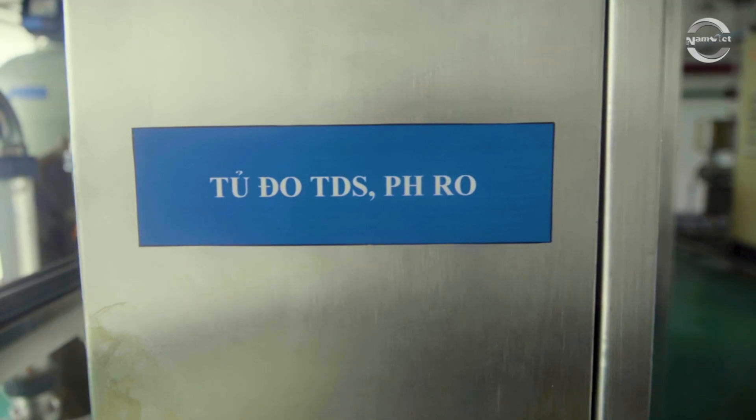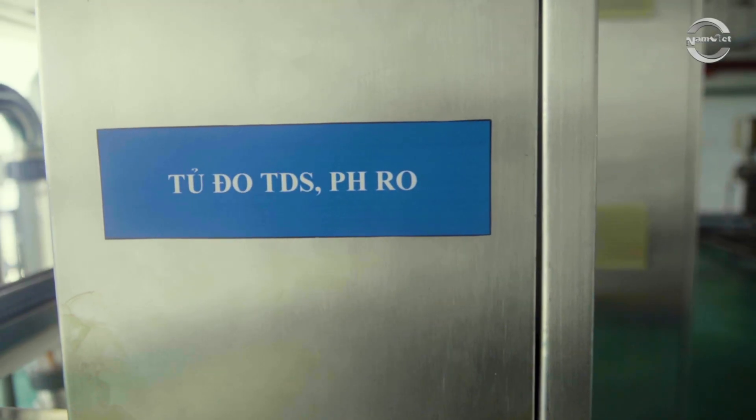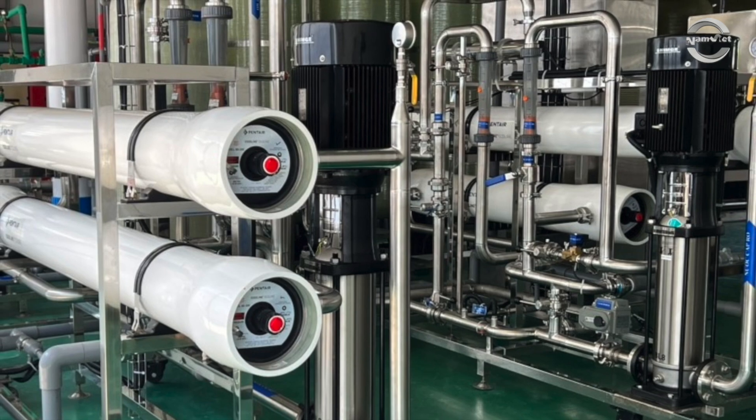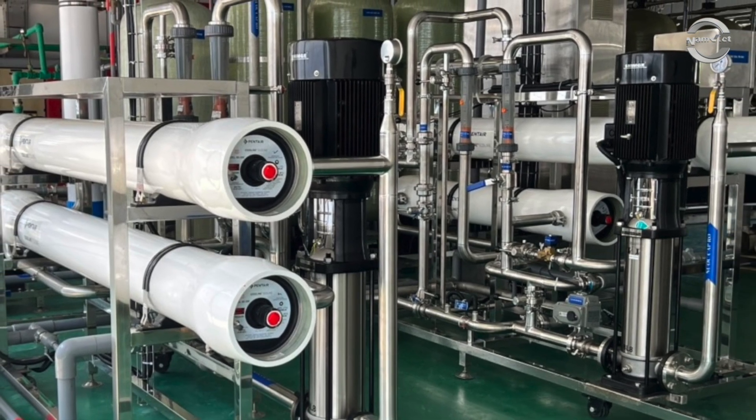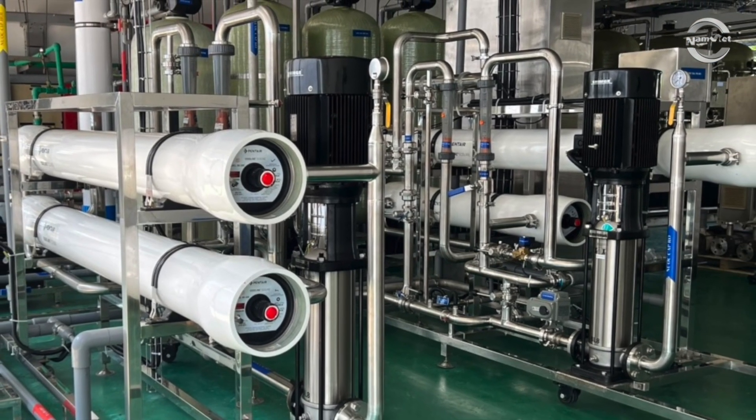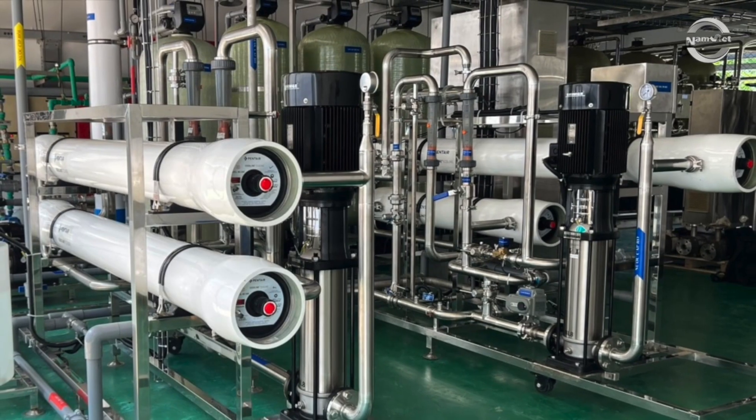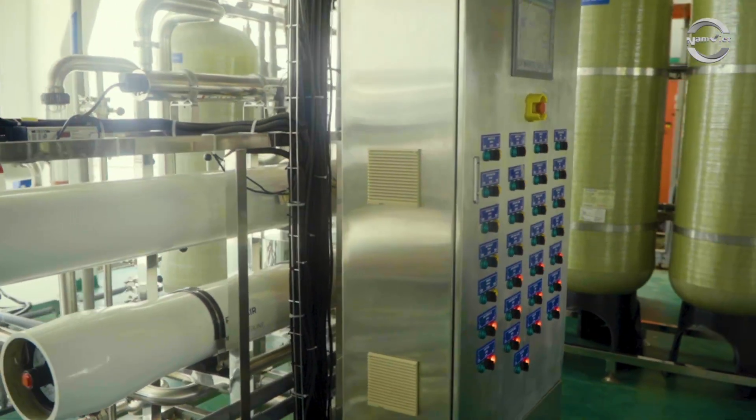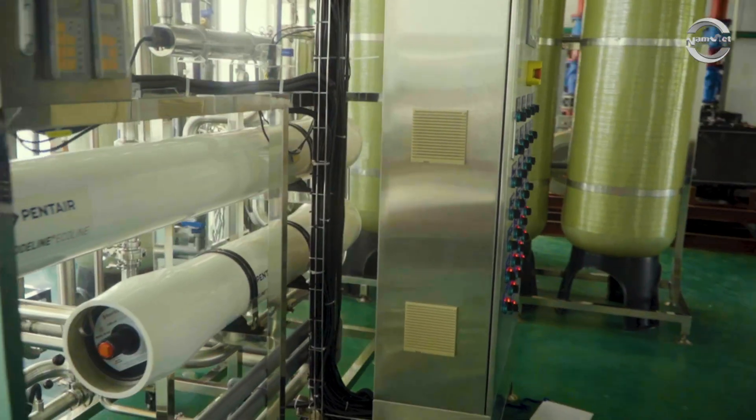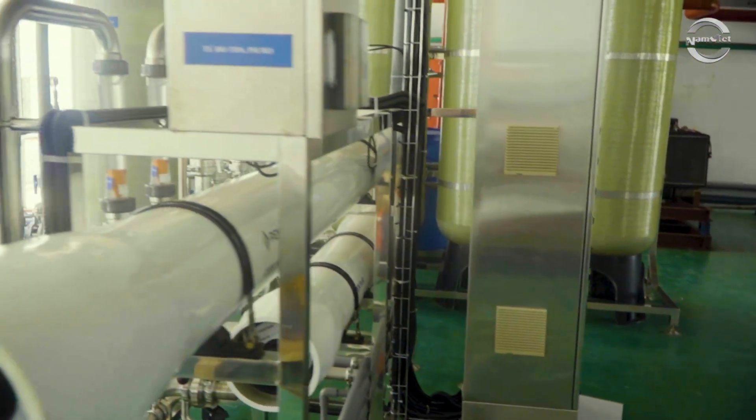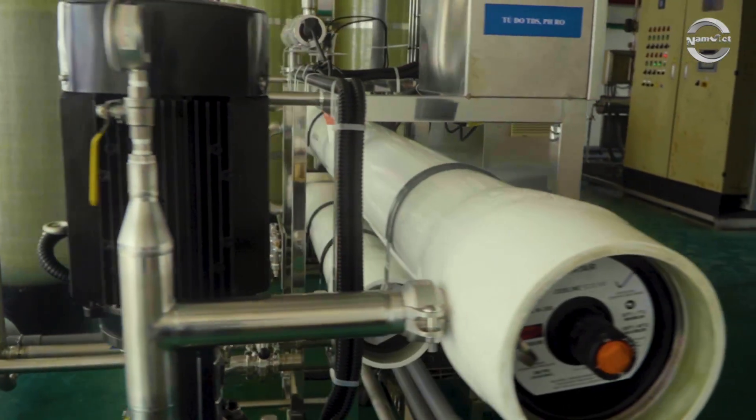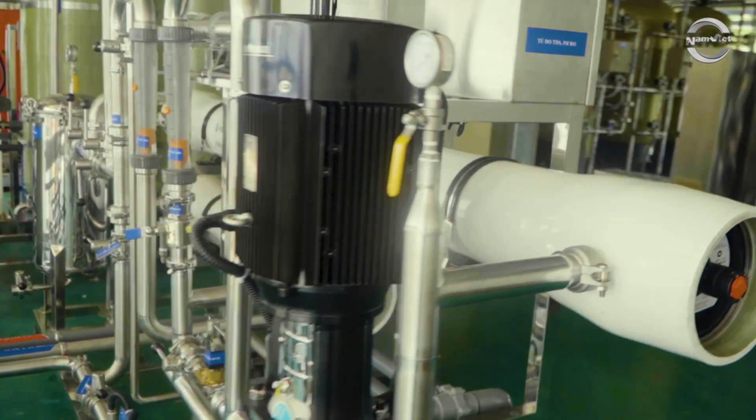This allows operational engineers to easily supervise and make necessary adjustments. A key highlight of this system is its flexible configuration, which allows for parallel or series operation. This makes it suitable for seasonal changes in water sources, freshwater versus saline water, producing different levels of water purity to meet the specific standards of each production stage within the factory.